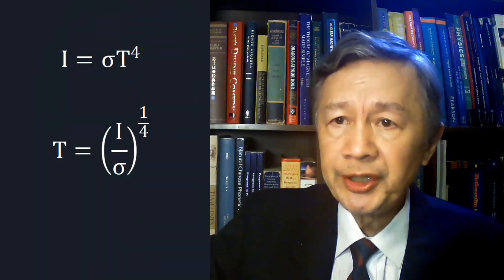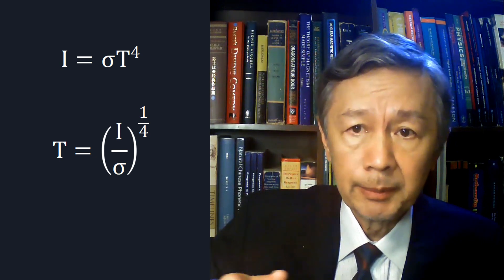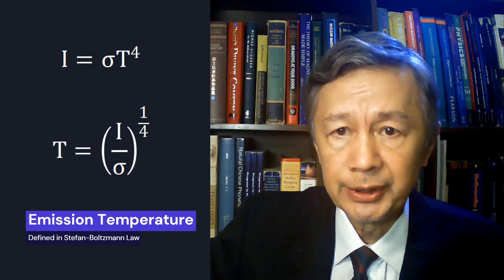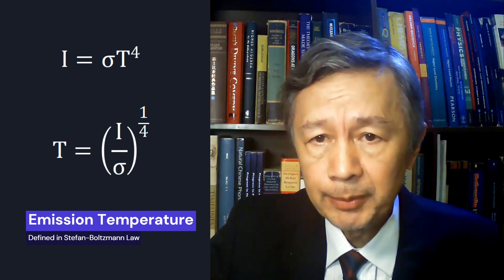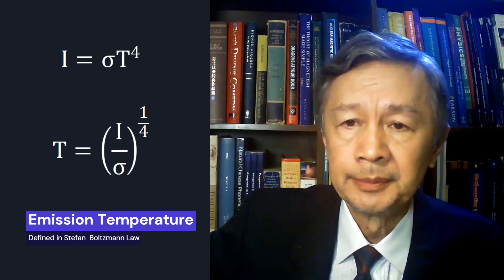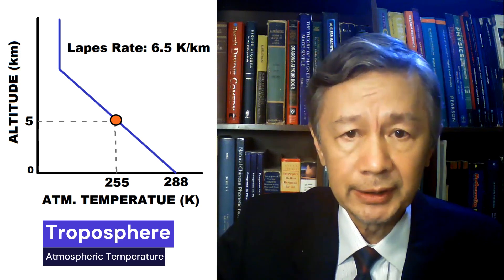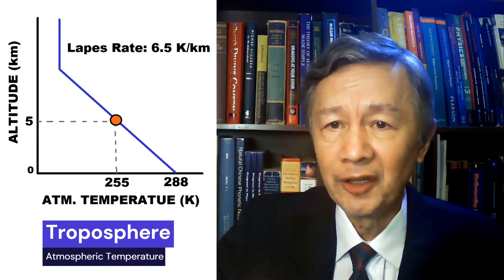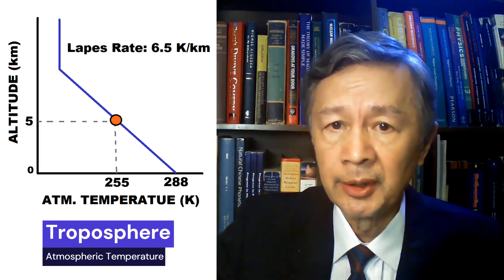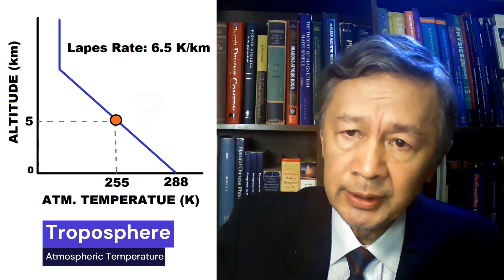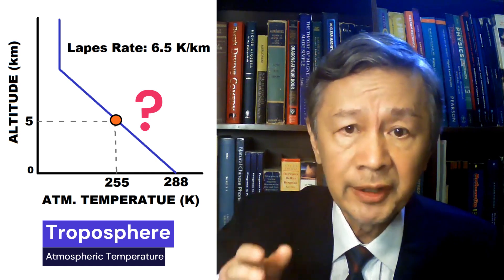The Stefan-Boltzmann law states that once radiation intensity is measured, in watts per meter squared, a single equilibrium surface temperature of this source can be calculated — defined as emission temperature. If one measures the outgoing infrared radiation of the Earth from a satellite, the mean emission temperature would be close to 255 Kelvin, which is apparently 33 Kelvin lower than the mean surface temperature of 288 Kelvin. Interestingly, the kinetic temperature near the altitude of 5 kilometers is equal to 255 Kelvin, using the lapse rate of 6.5 Kelvin per kilometer for the troposphere. Can we simply conclude that the emission altitude of the Earth is close to 5 kilometers above the surface?